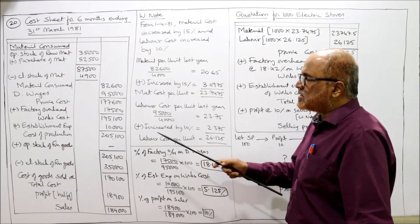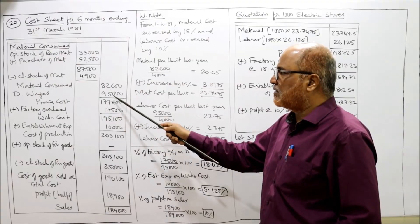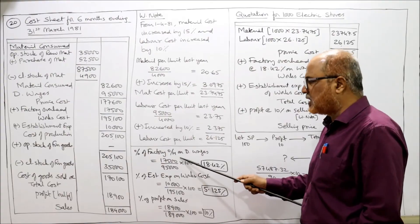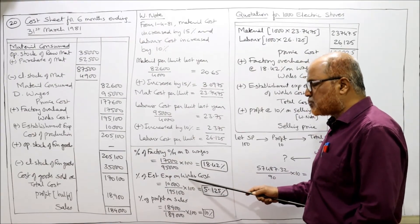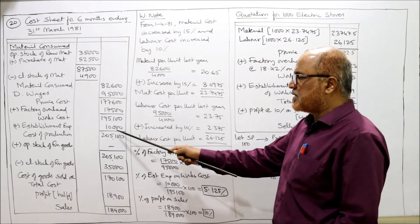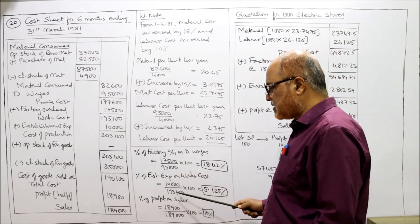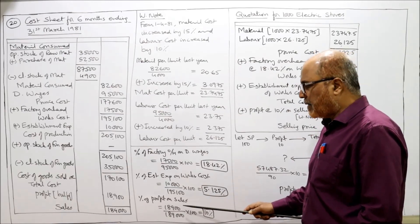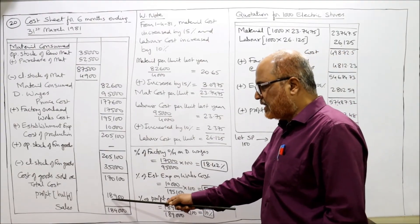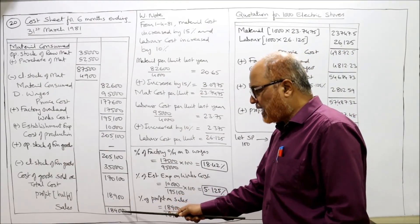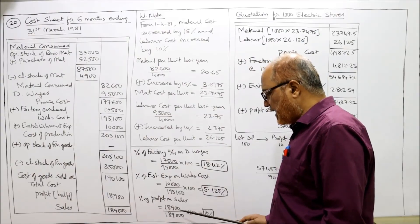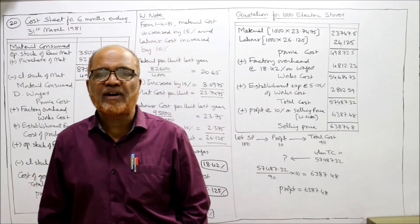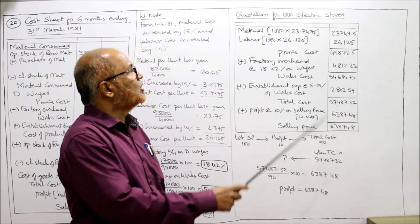Percentage of factory overhead on direct wages: factory overhead 17,500, direct wages 95,000 — 17,500 ÷ 95,000 × 100 = 18.42%. Percentage of establishment expenses on works cost: establishment expenses 10,000, works cost 1,95,100 — into 100 = 5.125%. Percentage of profit on sales: profit 18,900, sales 1,89,000 — 18,900 ÷ 1,89,000 × 100 = 10%. Now these percentages we apply in the quotation for manufacturing 1,000 stoves.